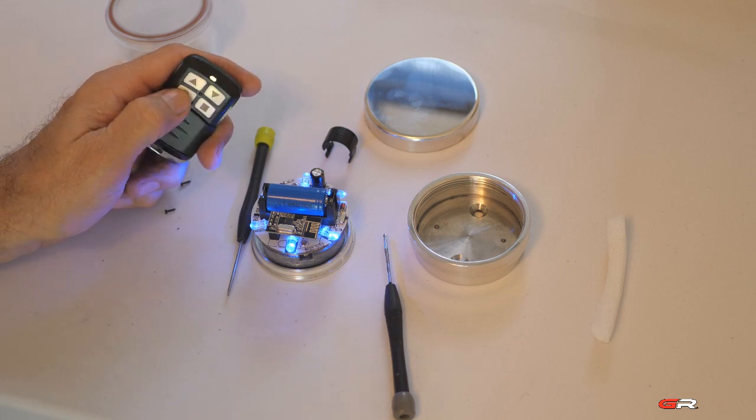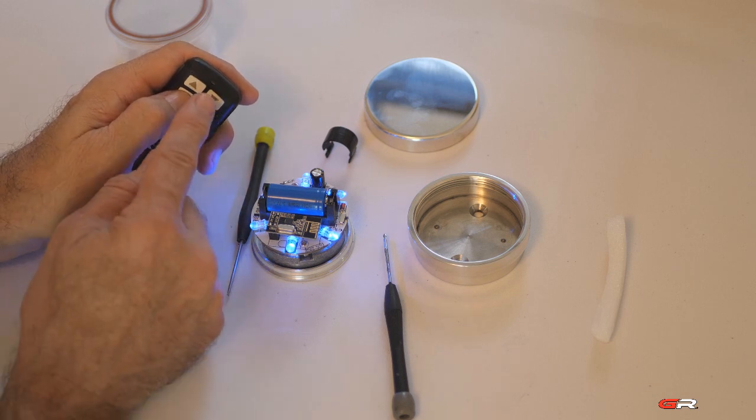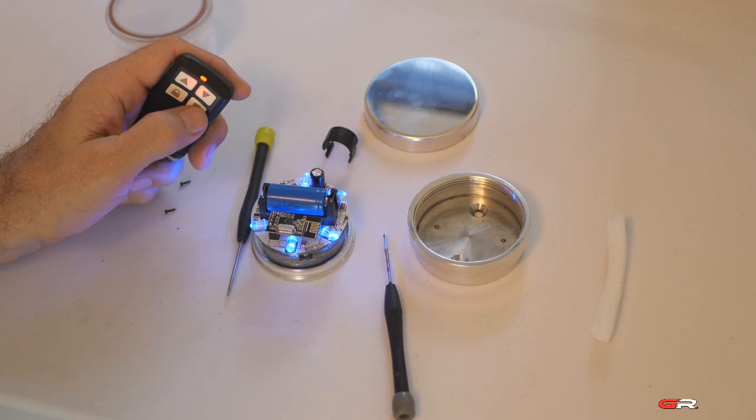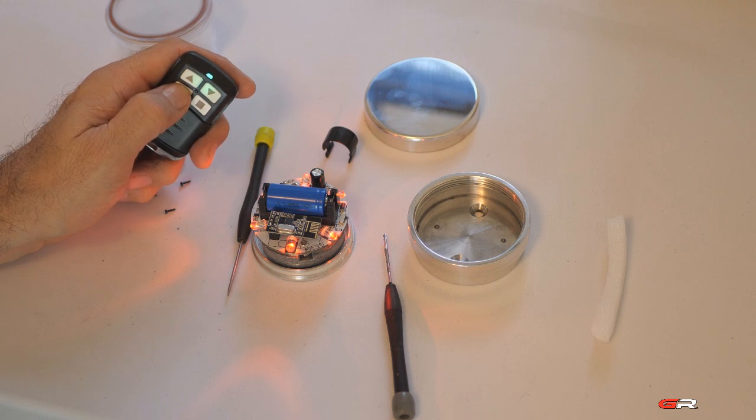So switch to a different color. Let's go to red and you'll notice that that cycle is going through there. If you press it while the light is still on it's not going to work. So wait until the light goes off and then you're ready to switch it to a different color.